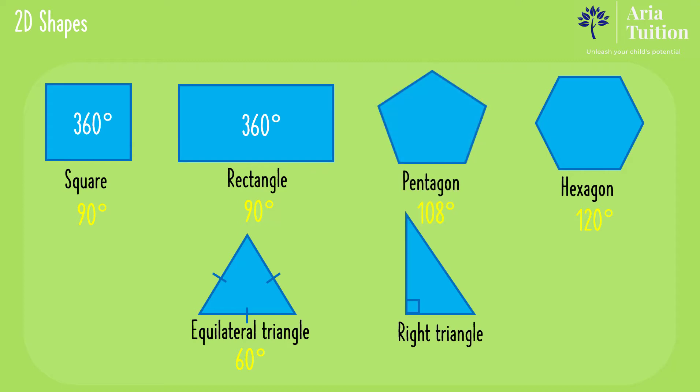A pentagon's angles equal 540 degrees. And a hexagon's angles equal 720 degrees altogether.